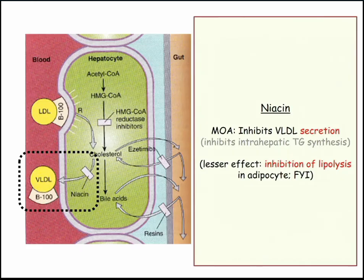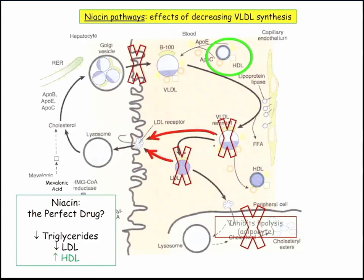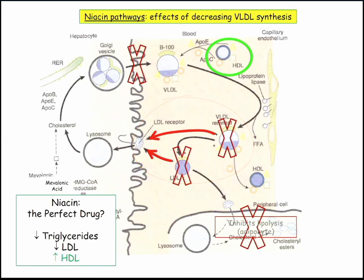Niacin. The mechanism is described as inhibiting VLDL secretion and inhibiting intrahepatic triglycerides — it's poorly understood. They're not going to ask you about mechanism in detail; they'll describe it as a drug that decreases VLDL secretion. Niacin decreases triglycerides, increases HDL, and decreases LDL. Historically, niacin was referred to as the perfect cholesterol-lowering drug. The only problem is there weren't really studies to support good outcomes — in contemporary trials it didn't really show up, so we've moved on to better alternatives.